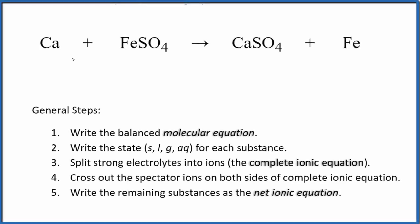In this video, we'll write the net ionic equation for Ca plus FeSO4. This is calcium plus iron 2 sulfate. So the first thing we need to do is balance the molecular equation. In this case, it's already balanced, so we don't have to do that.